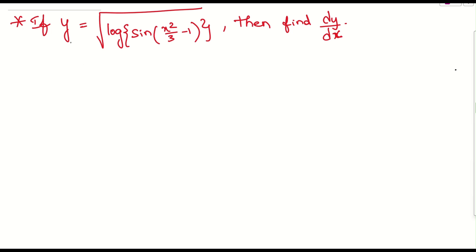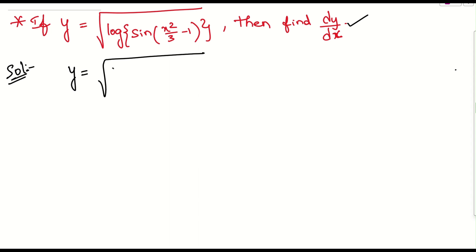Let us see what was the question given here. Y is equal to square root of log of sine of x squared by 3 minus 1. You need to find dy by dx. You can do this problem in two ways. One way is to take the unknowns as substitutions, like take x squared by 3 minus 1, then sine of the whole thing as u, v, w like that. Or there is another way — I will tell you both.